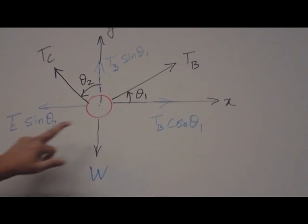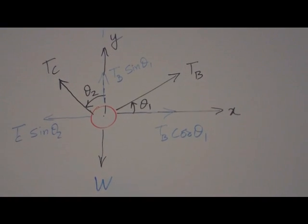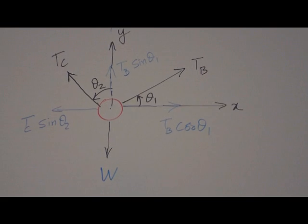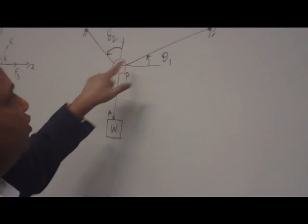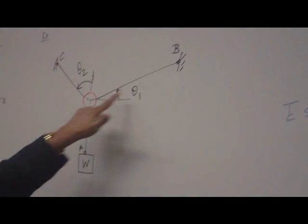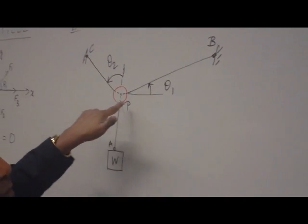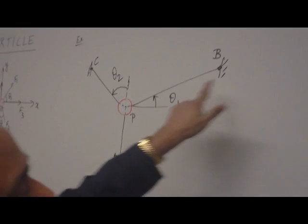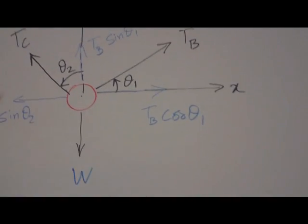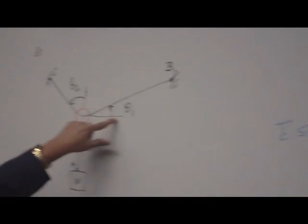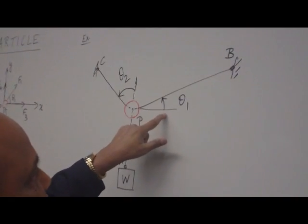So the particle is isolated. Now you show all the visible force, applied force, which is the weight, that is the visible force. The invisible, the hidden force or the tension along each cable supporting the particle. So one tension is TB, other tension is TC. Show that at the same angle. It's theta 1, that is theta 2, same angles are shown.